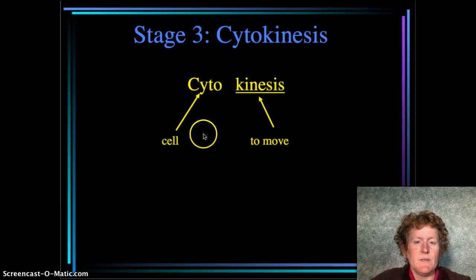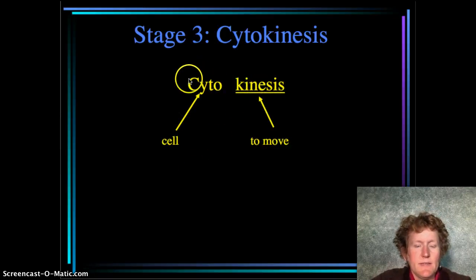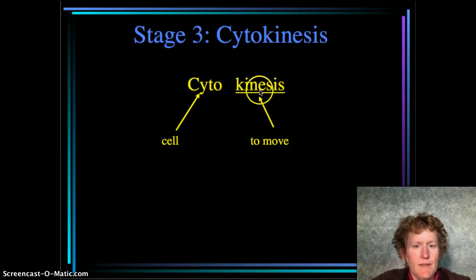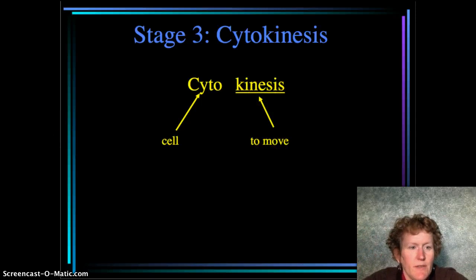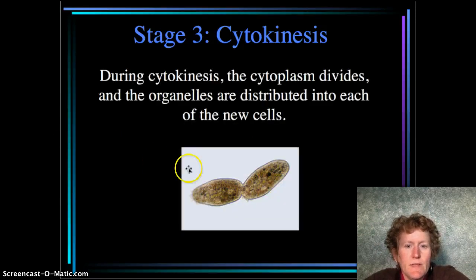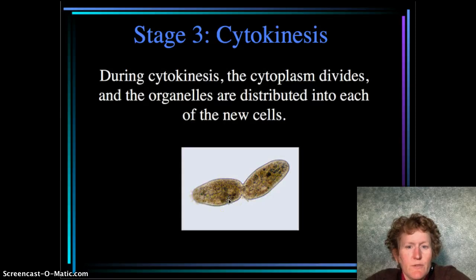After mitosis, you get cytokinesis. 'Cyto' means cell and 'kinesis' means to move, so the two parts of the cell move away from each other. They might not move far, but the organelles are redistributed and you get two new daughter cells.